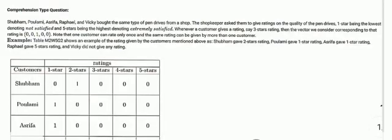Here's question number six, which is a comprehension type question. Shubham, Paulami, Arishfa, Rafael, and Vicky brought the same type of pen drives from a shop, and the shopkeeper asked them to give ratings to the quality of the pen drives — one star for being the lowest, denoting not satisfied, and five stars for being the highest, denoting extremely satisfied.